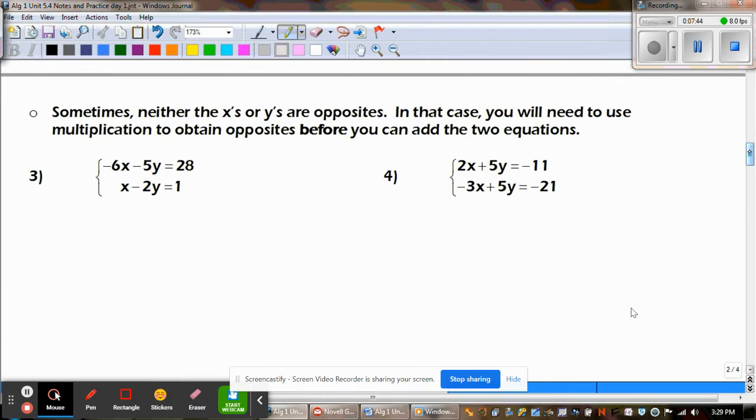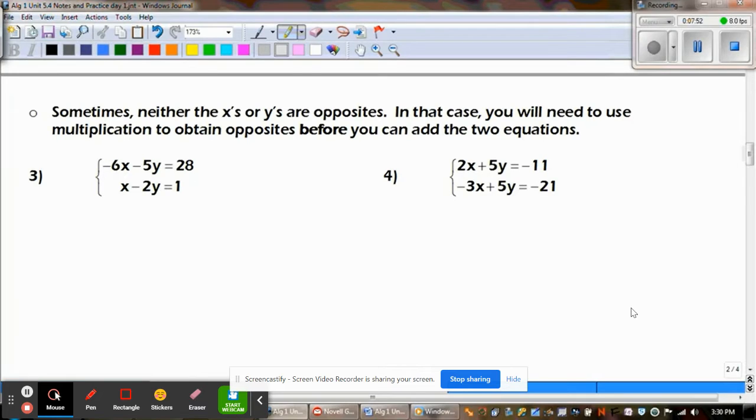Now sometimes neither the X's or the Y's are opposite. In that case, you need to use multiplication to obtain opposites before you can add the two equations. Okay, so we need to figure out what we want to cancel and then we're going to have to multiply stuff out.